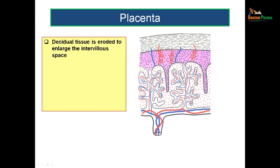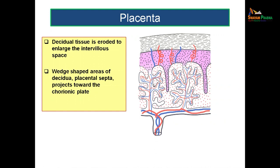The decidual tissue, which is part of the maternal endometrium, is eroded by the enlarging intervillus spaces. The region of decidua that persists between the intervillus spaces is known as placental septa, which project towards the chorionic plate. The intervillus spaces erode the endometrium, and the remaining decidua forms these placental septa.